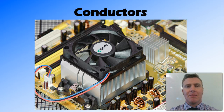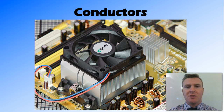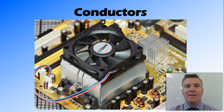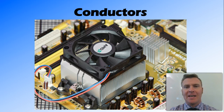A heat sink is used in a few instances, but one is in computers. The CPU of a computer generates a lot of heat and that heat can damage the chipboard. So what we do is have a good conductor sit right on top of the CPU, which conducts the heat away from the chipboard. It has fins and air is blown over those fins to get the heat out as quickly as possible so it doesn't cause any damage.